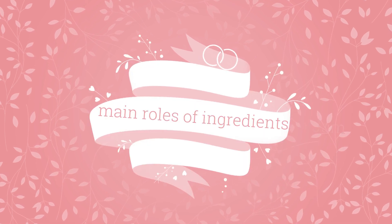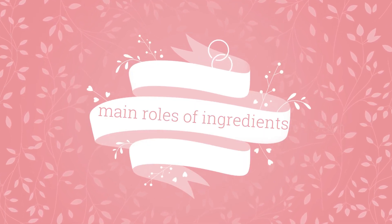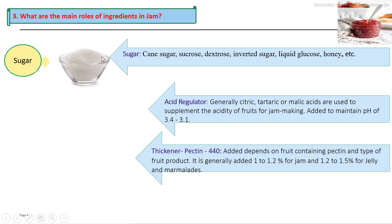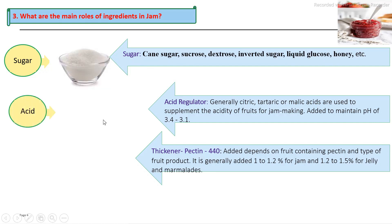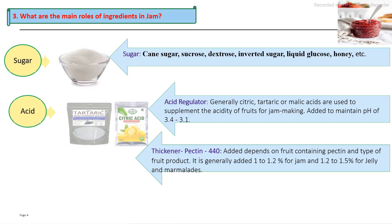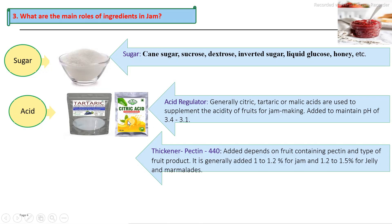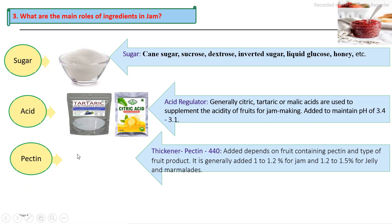The next ingredient is sugar. Cane sugar or sucrose is mostly used in the jam manufacturing process, and may be supplemented with liquid glucose or honey. Third is acid — organic acid is used, mostly tartaric or citric acid, to maintain the pH level of the final product between 3.1 to 3.4, or an acidity of 0.4 to 0.8%. Next is pectin, which is the thickener added at up to 1%, as a number of grades of pectin are available.